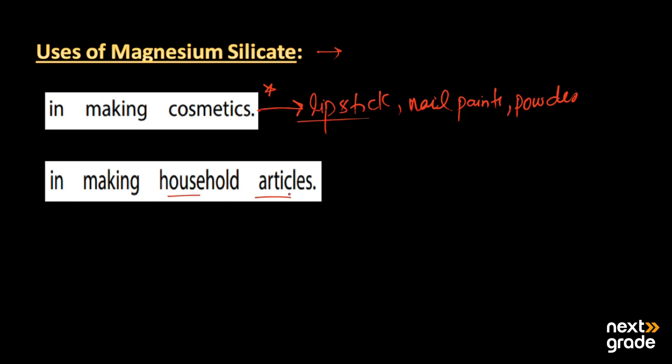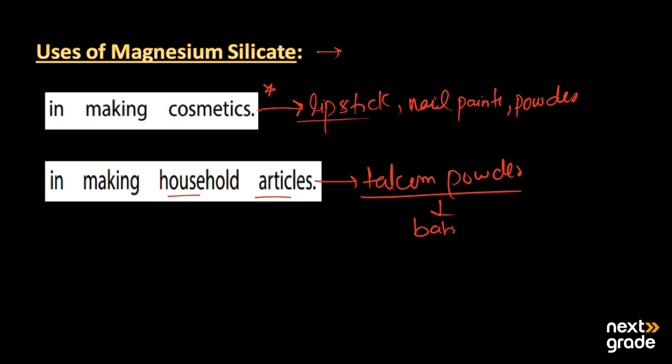Magnesium silicate is also used in making household articles. Because of its white crystalline appearance, it is useful in the production of many articles used in our homes. It is also used as talcum powder, and it was also used as baby powder.